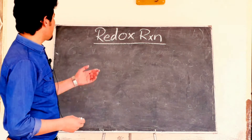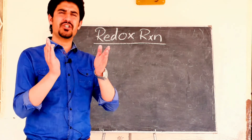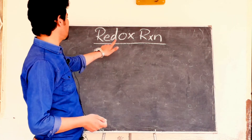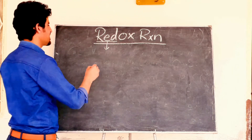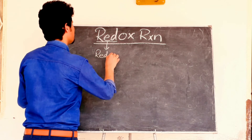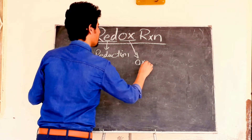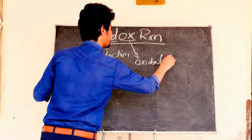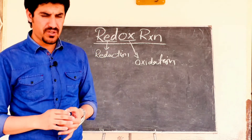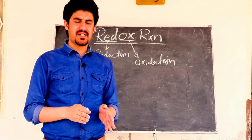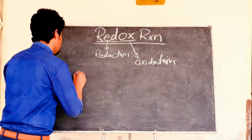So let's start. Our topic today is redox reaction. More commonly known as oxidation-reduction reaction. 'Red' stands for reduction and 'ox' stands for oxidation. Those reactions in electrochemistry in which the reduction reaction and oxidation reaction are taking place simultaneously are known as redox reactions.